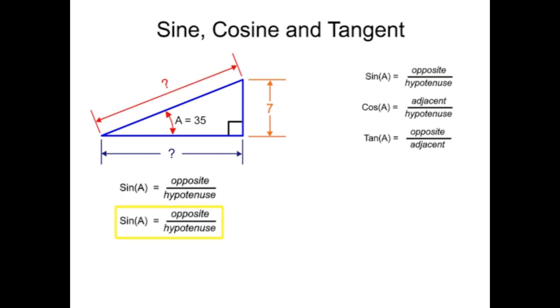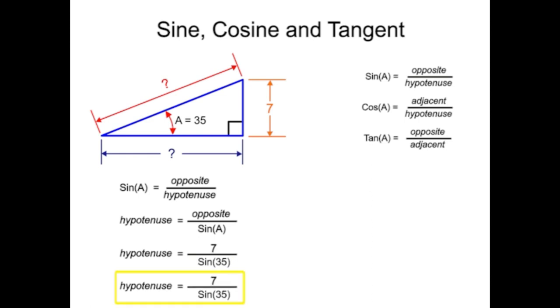First, rearrange the equation to solve for the hypotenuse. Then, using a calculator, enter 35 degrees into the sine function. Substitute the value into the equation and calculate the results.